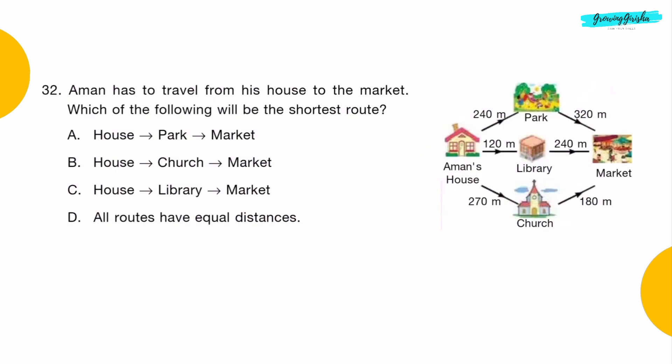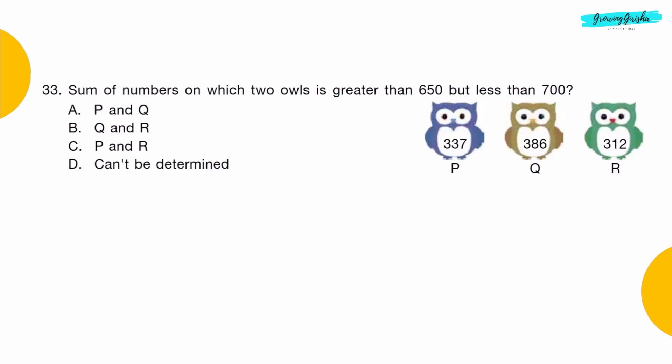Question 32: Aman has to travel from his house to the market. Which of the following will be the shortest route? Option C: House to market via library.